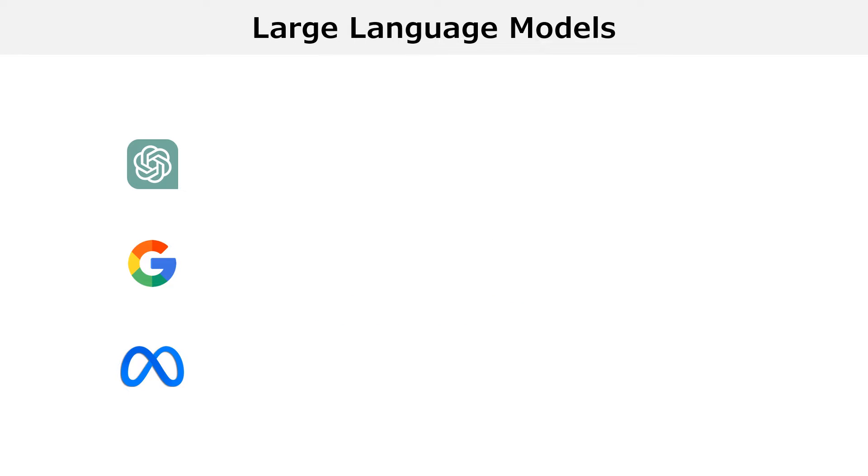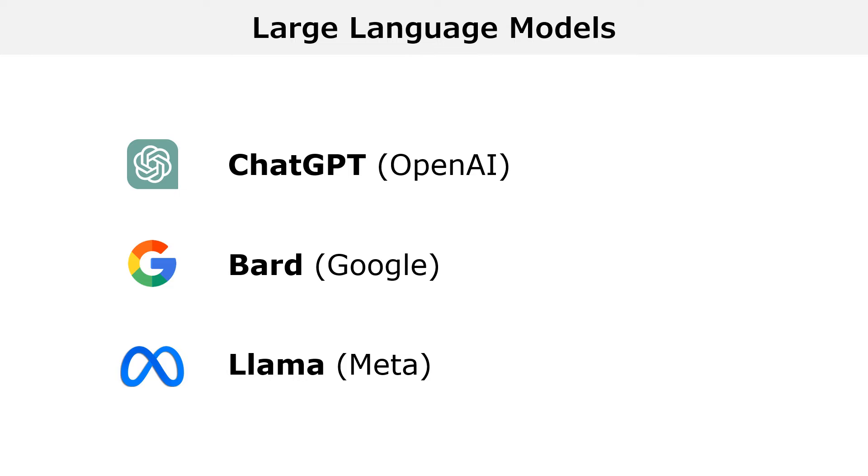Large language models are statistical models used to generate human-like text. Some examples that you probably know very well are OpenAI's ChatGPT, Google's BARD and Meta's Llama. We are going to explain the basics of how these models work.